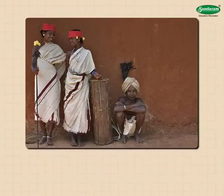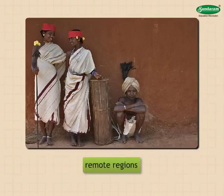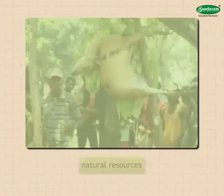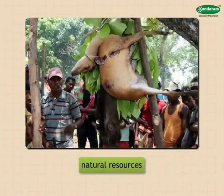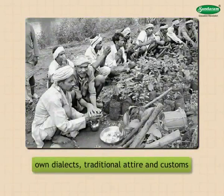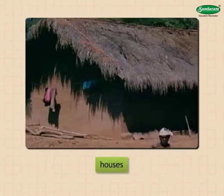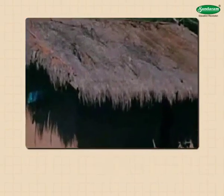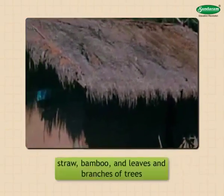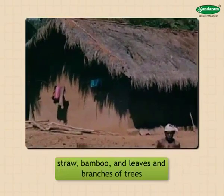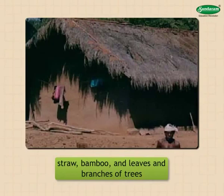Life of the Adivasis: since long, some people have been living in remote regions. For their livelihood, they depend on the natural resources available in their surroundings. They have their own dialect, traditional attire, and customs. These people are known as Adivasis. Generally, the houses of Adivasis are made up of straw, bamboo, and leaves and branches of trees. Their settlements are called differently in different regions — for example, pada, pad, tola, zaap, etc.